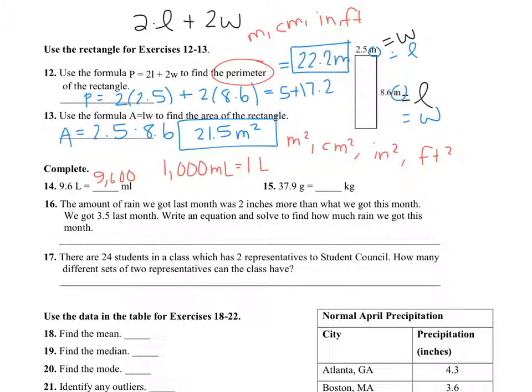And then 15, 37.9 grams is how many kilograms? Well, we know that there are 1,000 grams equal to 1 kilogram. So I want to make this number smaller and move the decimal over 3 times. 1, 2, 3. So it's 0.0379 kilograms.